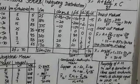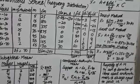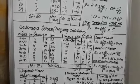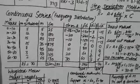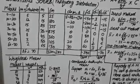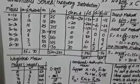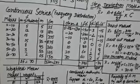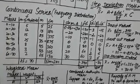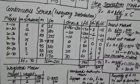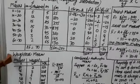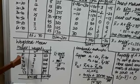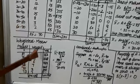In case of continuous series, class intervals may be of various types — exclusive, inclusive, or of unequal size. In all cases, calculation of arithmetic mean is done in the same way as in exclusive type of class interval. Now let us study how to calculate weighted arithmetic mean.